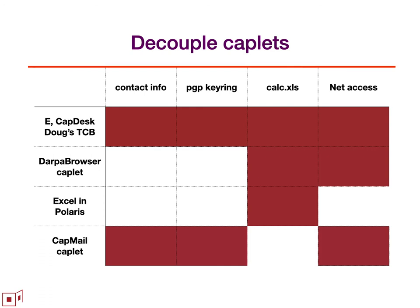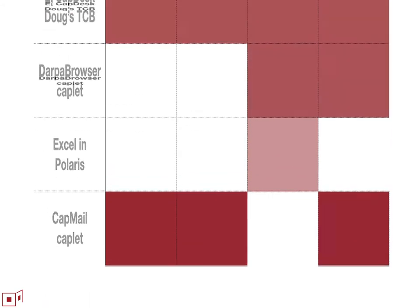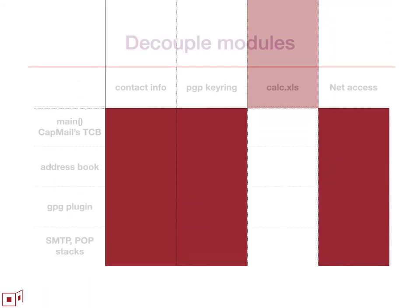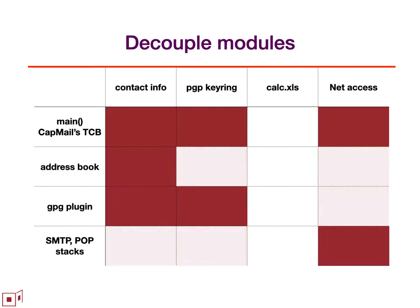To reduce risk yet further, let's focus in on the cap mail caplet. The cap mail caplet, being written in an object capability language, unsurprisingly has its different modules with access to different subsets of the authority granted to cap mail as a whole.